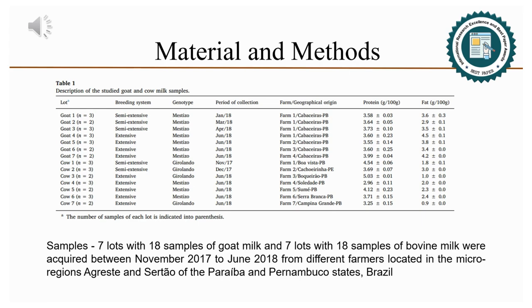In order to construct a representative model containing different variability sources of the raw materials, seven loads with 18 samples of goat milk and seven loads with 18 samples of bovine milk were acquired between November 2017 to June 2018 from different farmers located in the micro-regions Agreste and Sertão of Paraíba and Pernambuco States, Brazil.